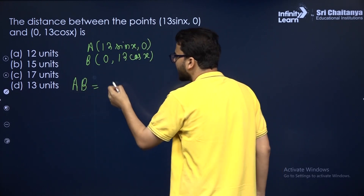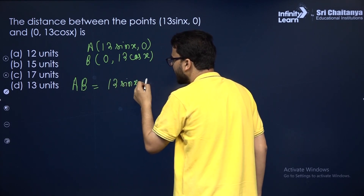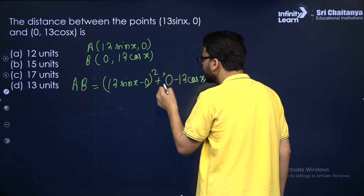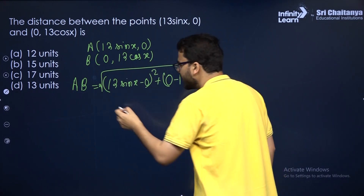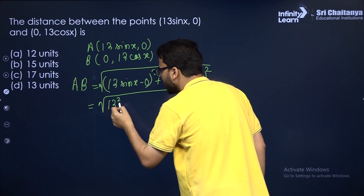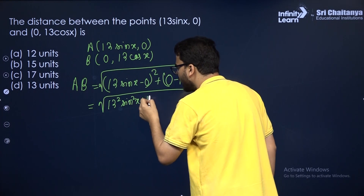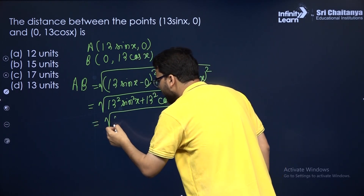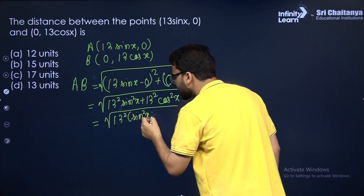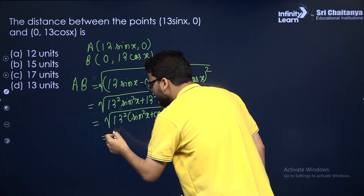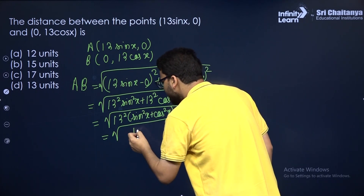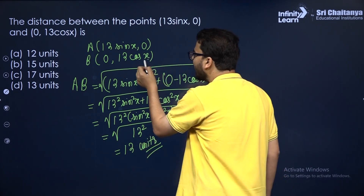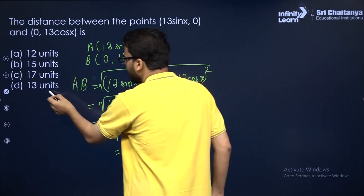Using the distance formula, AB equals the square root of (13 sin x minus 0)² plus (0 minus 13 cos x)². This simplifies to the square root of 13² sin²x plus 13² cos²x. Taking 13² as common, we get the square root of 13² times (sin²x plus cos²x). Since sin²x plus cos²x equals 1 from trigonometry, this is the square root of 13², which equals 13 units. So irrespective of the value of angle x, the distance is always 13 units.